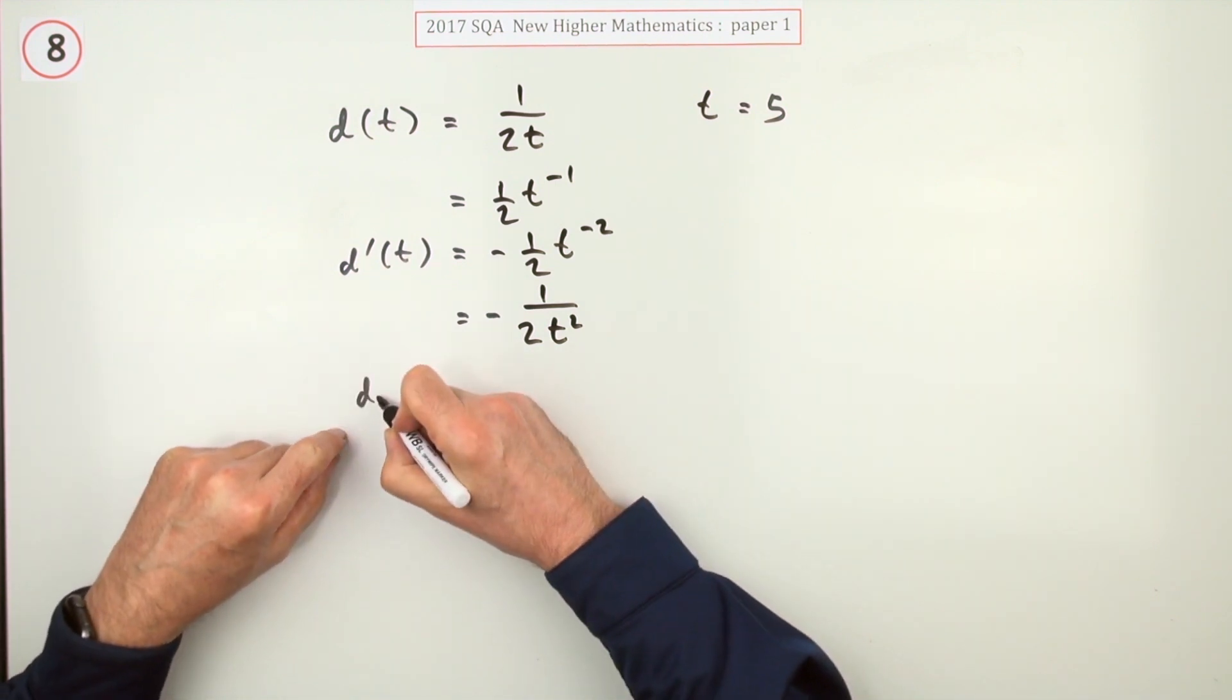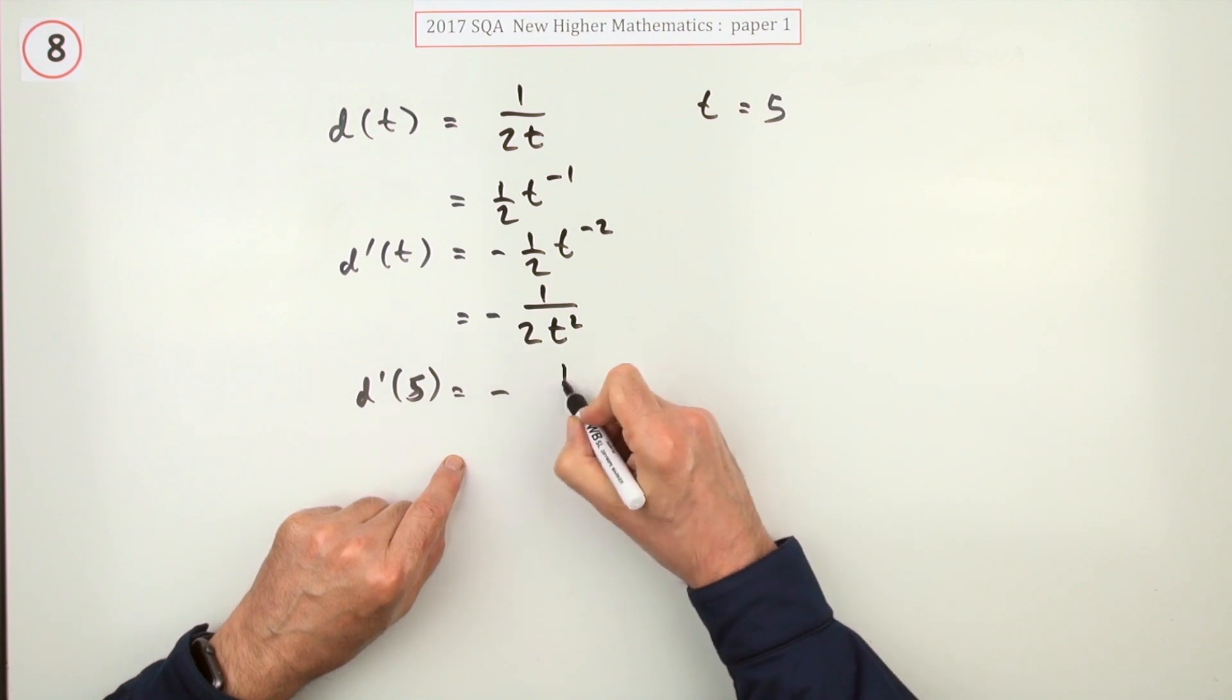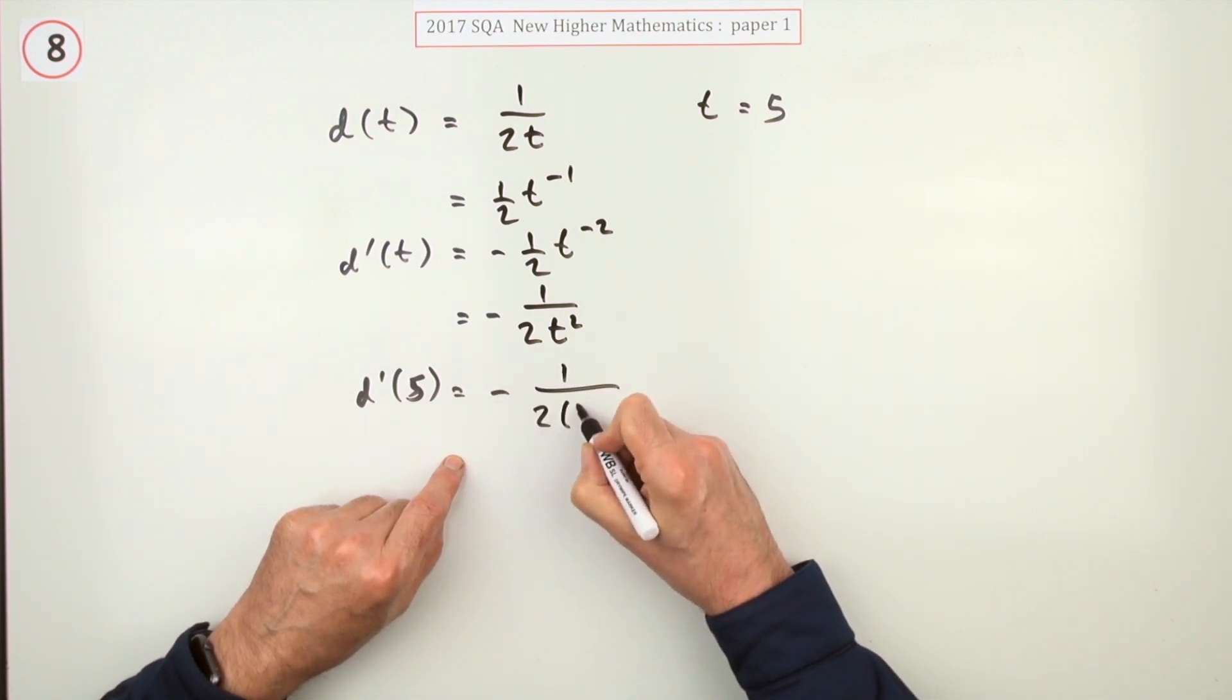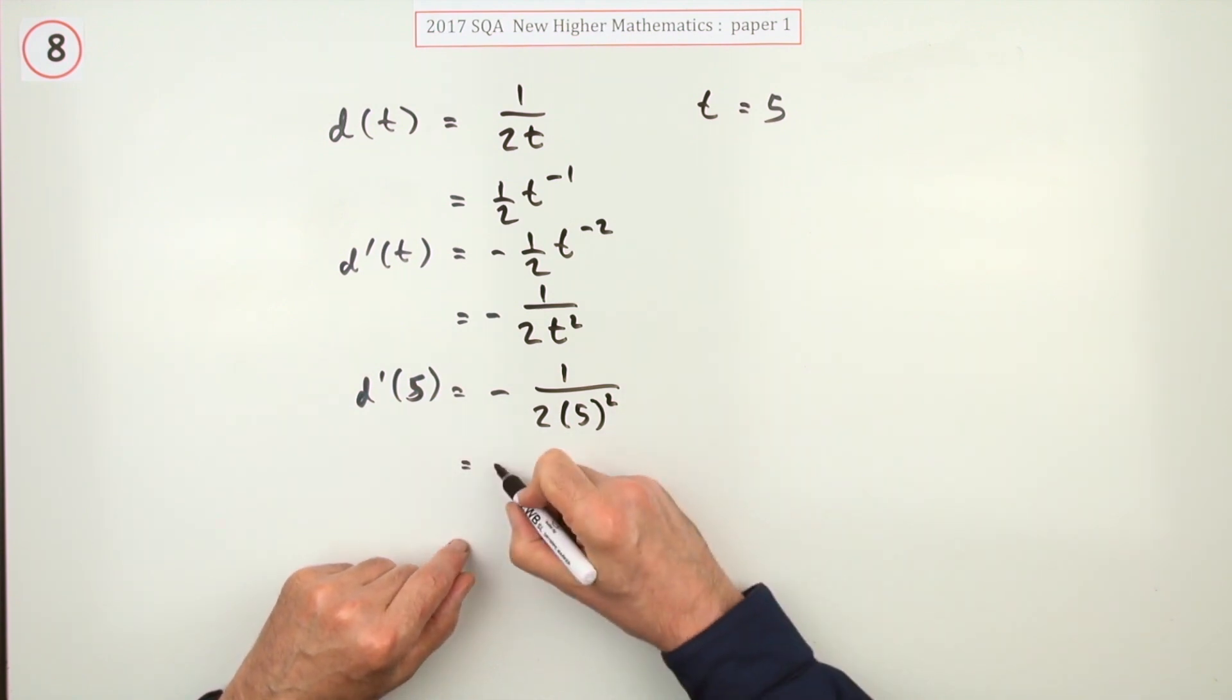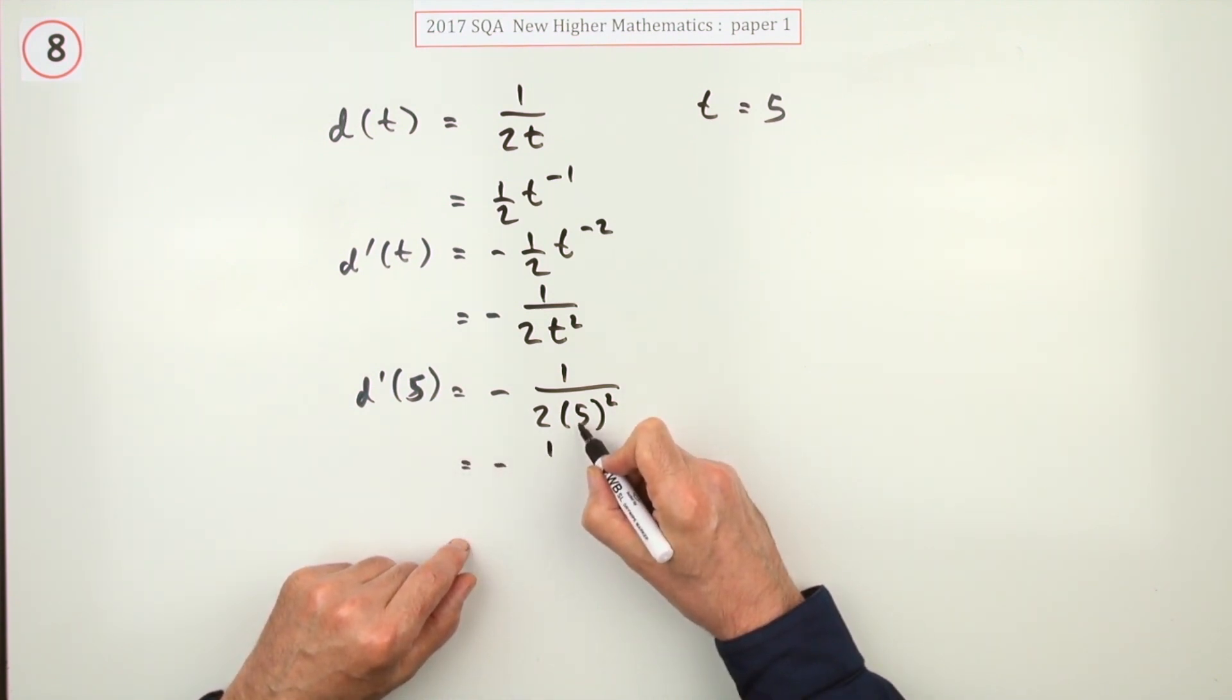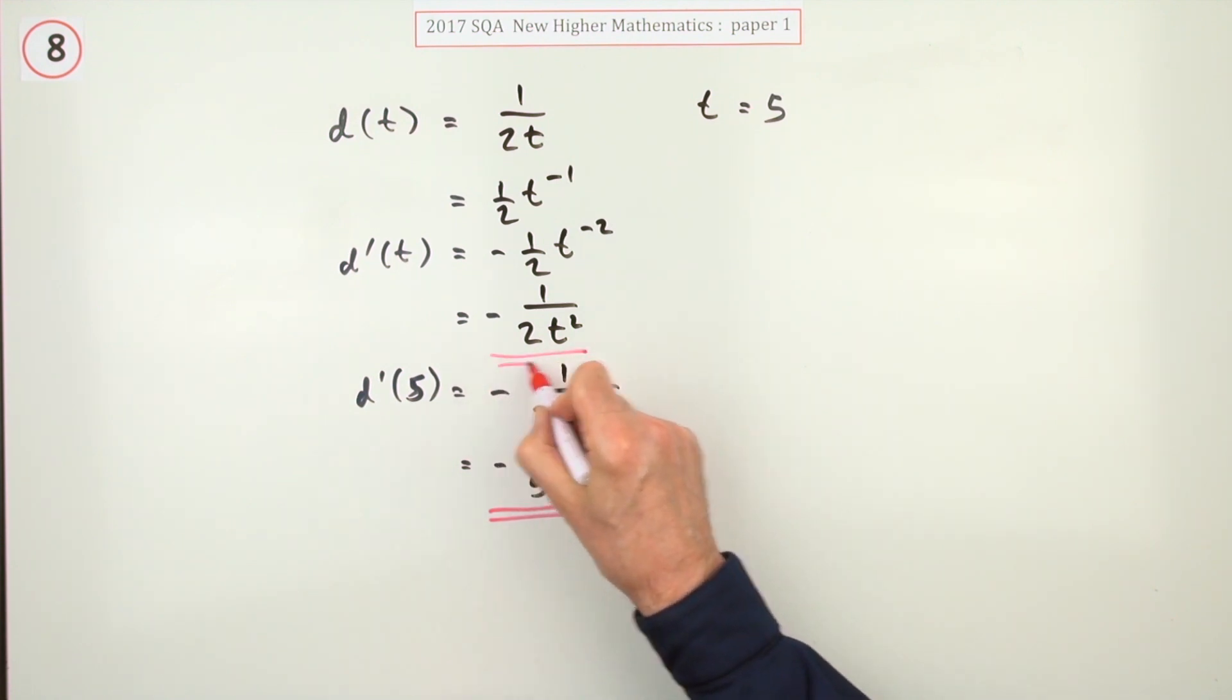Well, and then it says, what's the derivative when t's 5? It'll be negative 1 over 2 times, and that's a 5 being squared, not 2 times 5 being squared. So it's negative 1 over 5 squared is 25, double it, 50. So negative 1 fiftieth. That was the derivative there.